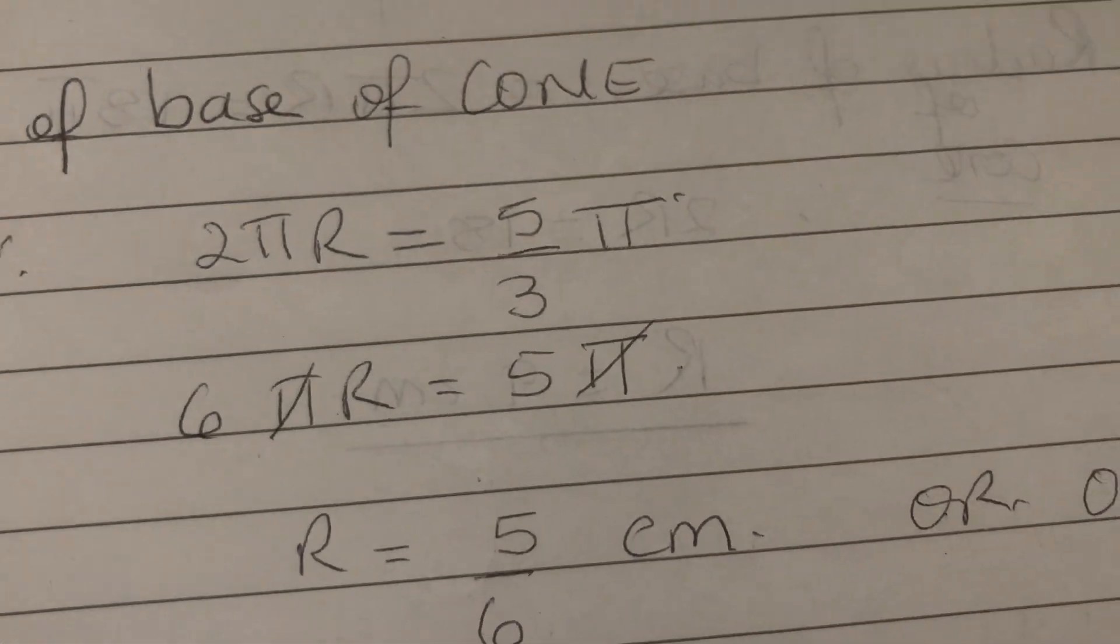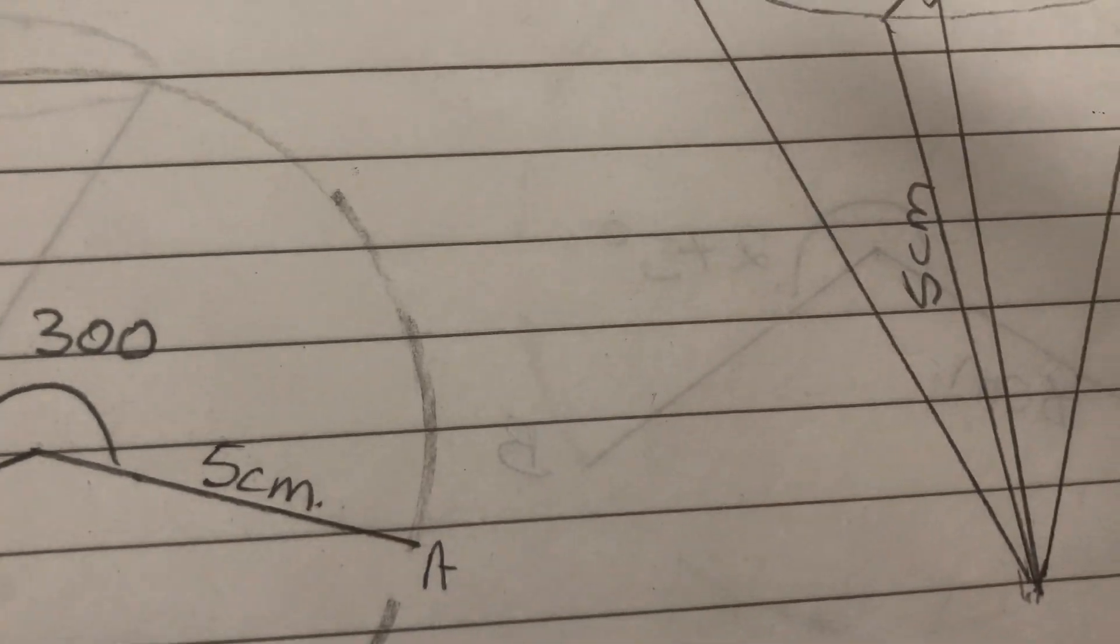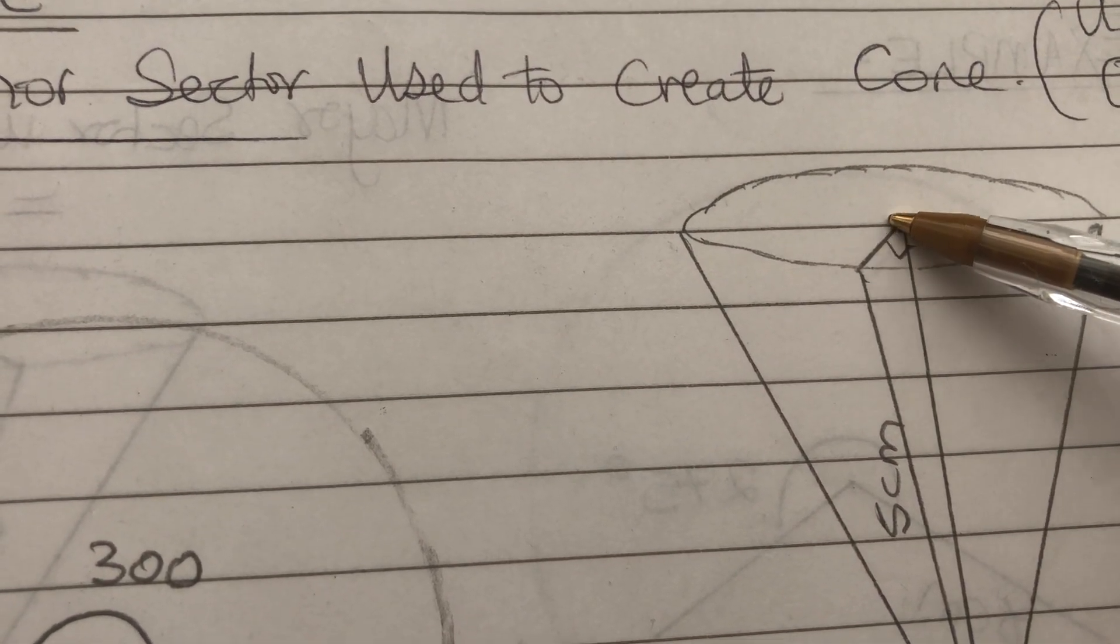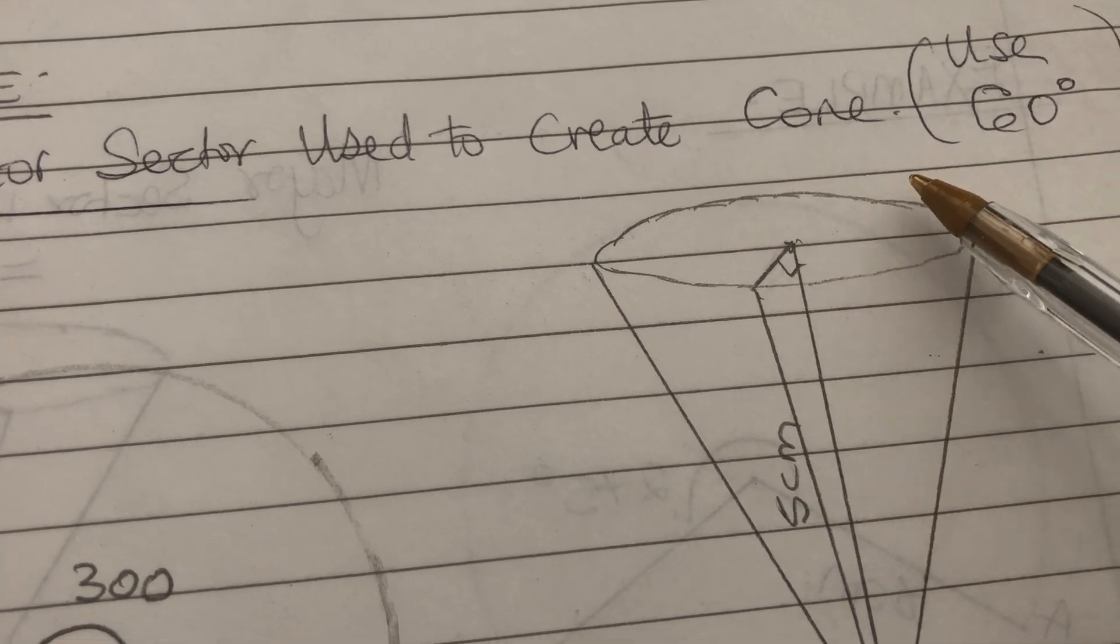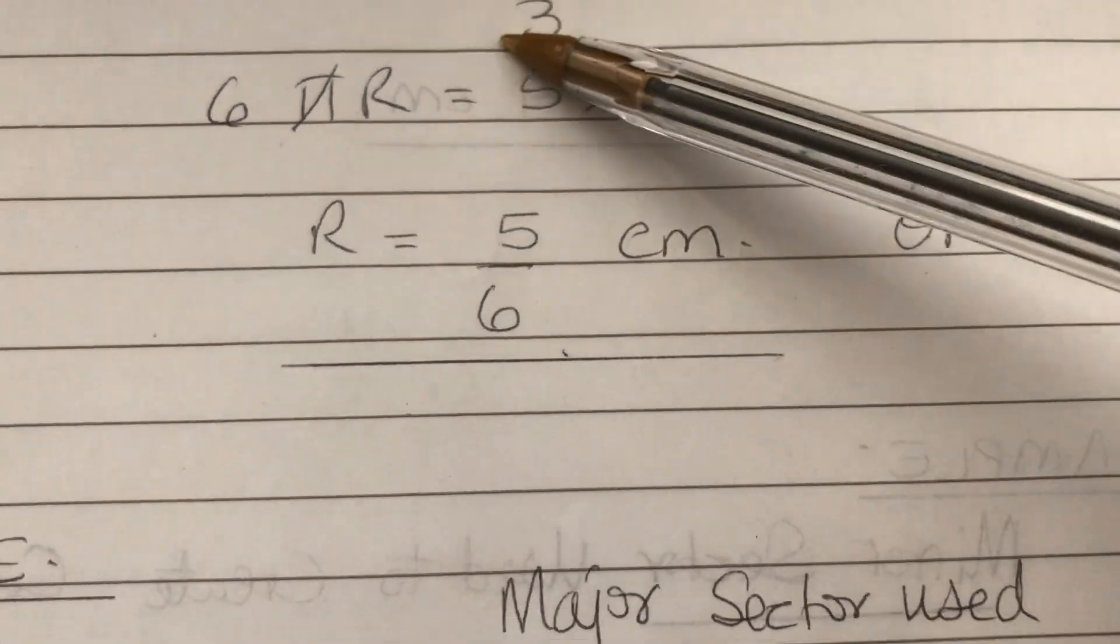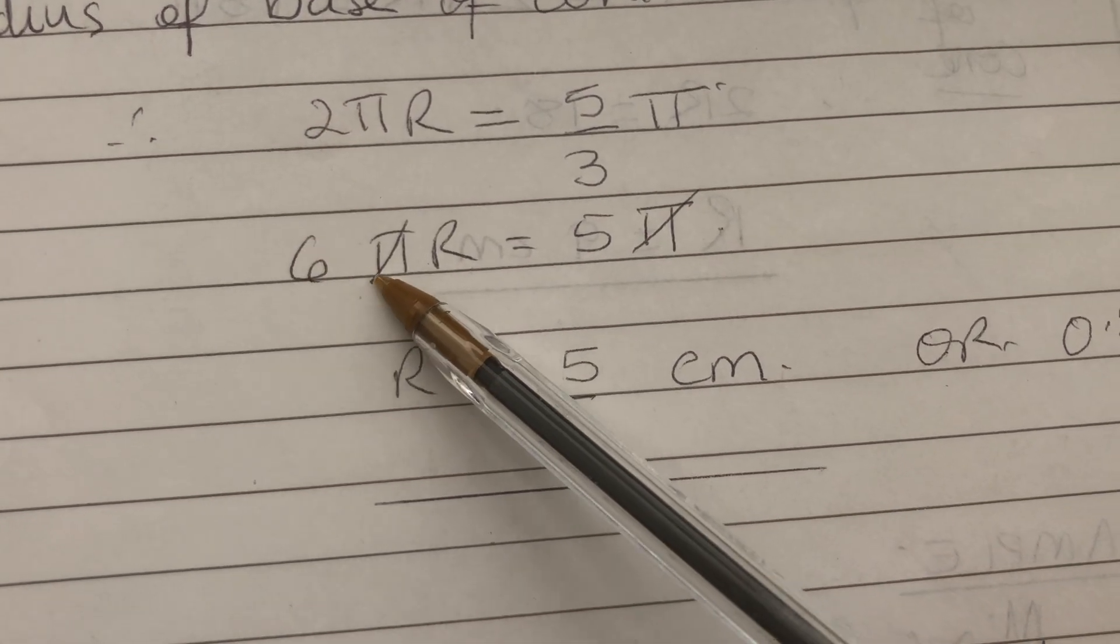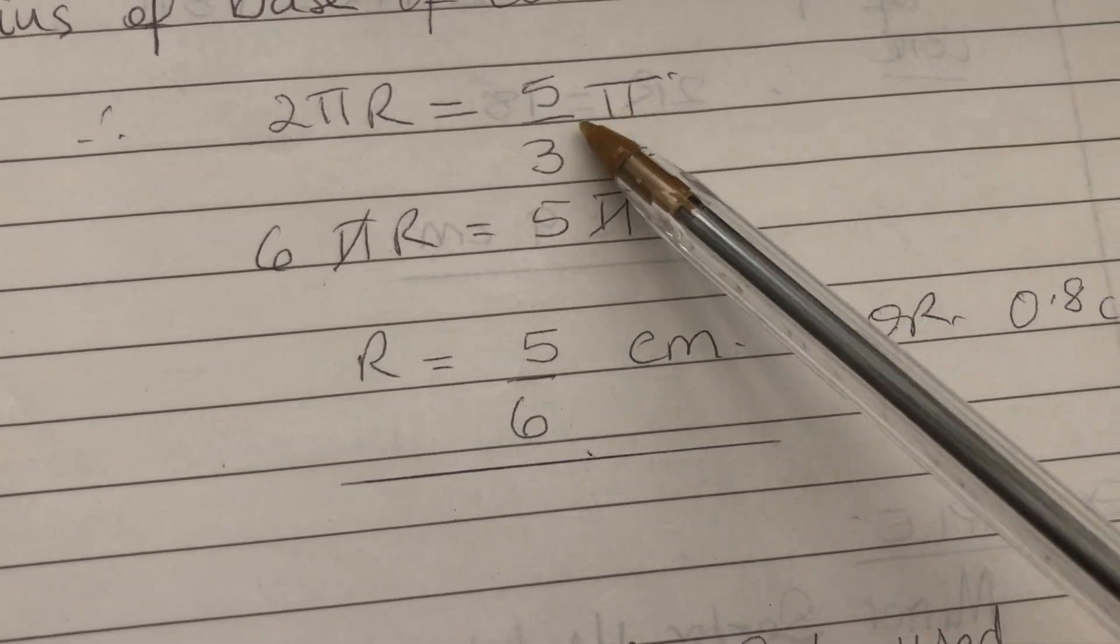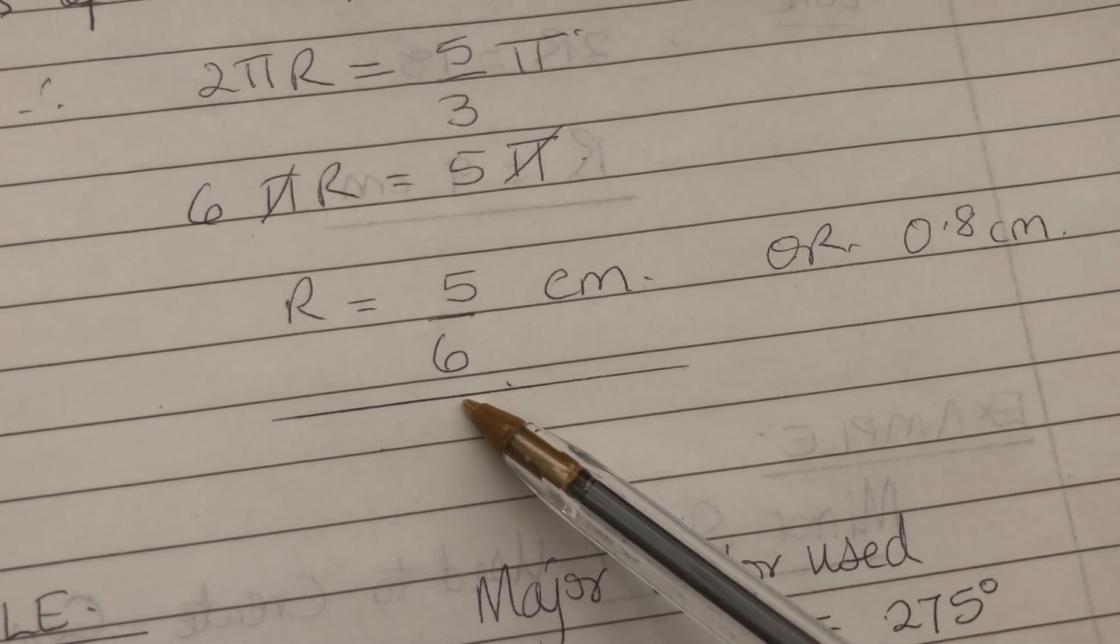So, we are going to use the angle of the minor sector, which is 360 minus 300, which would be 60. So, I've written here, major sector, minor sector use. So, we'll use 60 degrees. So, here, again, to find the arc length, will be 60 over 360 times 2 pi r. So, 60 over 360 times 2 pi r. And r here is 5 centimeters. So, if you do this right, and you cancel out, you get 5 over 3 pi in centimeters.